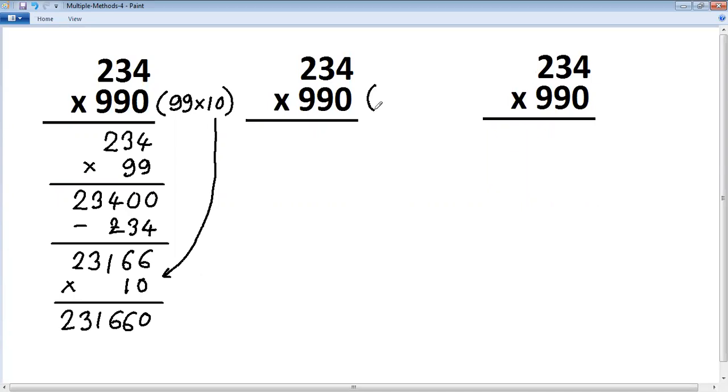Second method, I'll try to use series of 1. So 990 I'll put it as 11 into 9 into 10. First we'll multiply it by 11. 234 multiplied by 11: 4, 3 plus 4 is 7, 2 plus 3 is 5, and then 2. Next, multiply by 9.